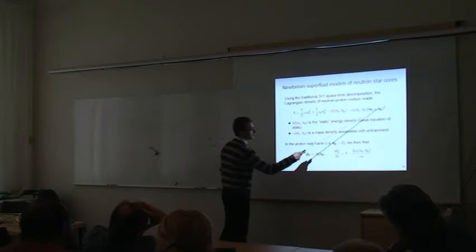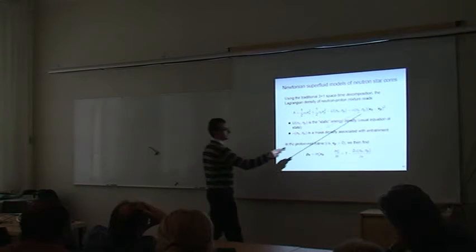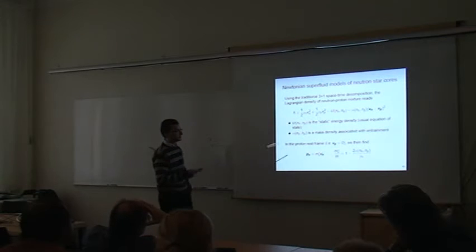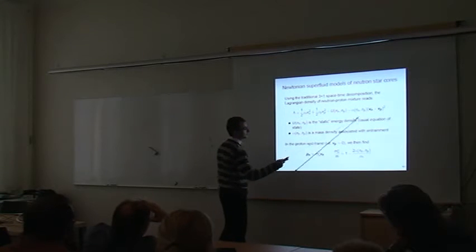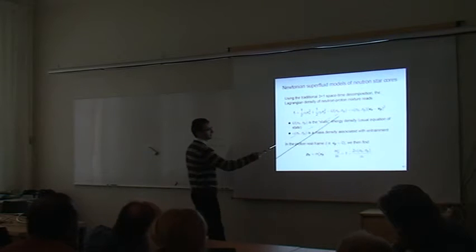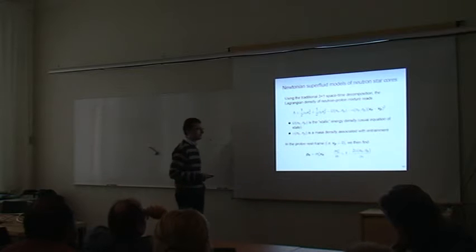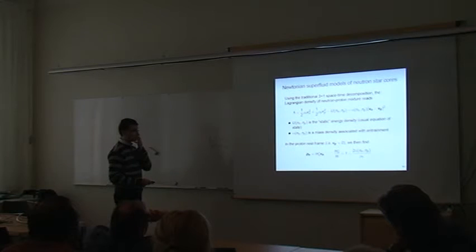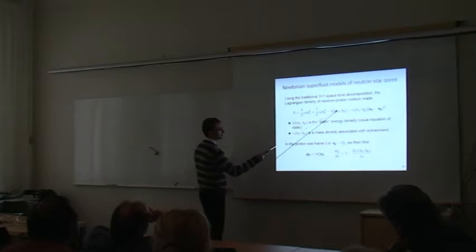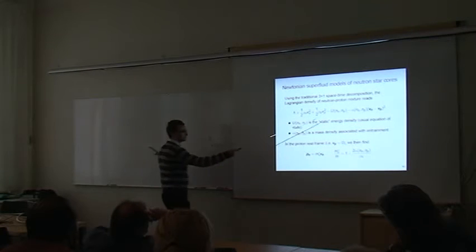Here we assume that the relative velocities are small, but in general one could consider more complicated forms, quadratic and higher-order terms. What is new here is that there is some extra quantity which depends on the densities and which has to be calculated consistently with the energy density.